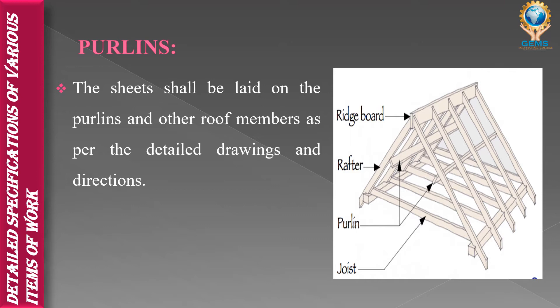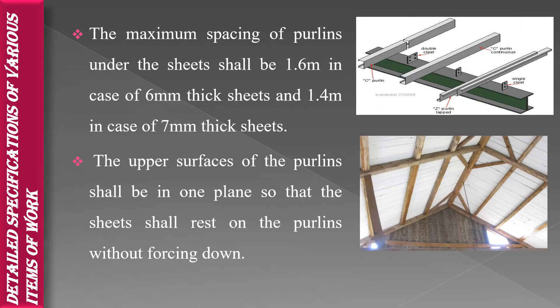Purlins are supported either by the rafters or by the wall of the building. The sheets shall be laid on the purlin and other roof members as per the detailed drawings and directions. Depending on the drawings, we lay the purlins. The images shown here are examples of purlin structures — you can see overlapping, and purlin-type structures in homes, schools, chapels, and factories.